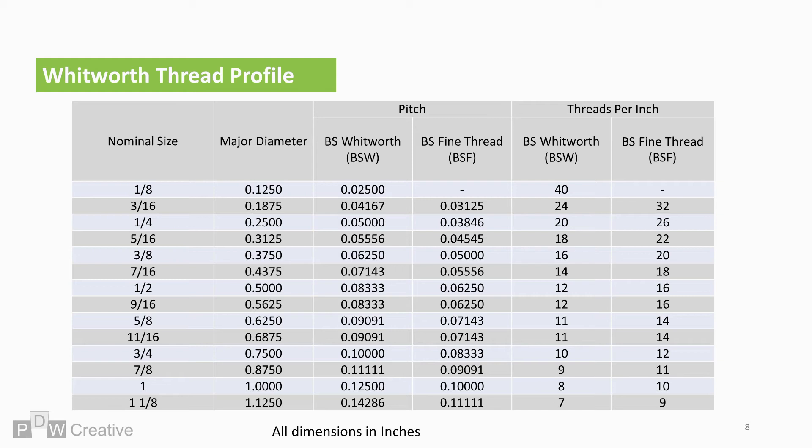BS84 details widely accepted thread diameter and pitch combinations for BSW and BSF threads. Here is a basic table for threads up to one and one eighth of an inch, matching nominal thread sizes to BSW coarse threads and BSF fine thread pitches.